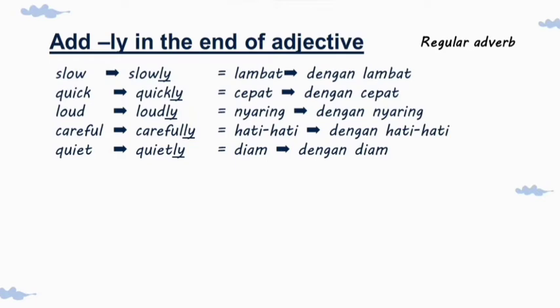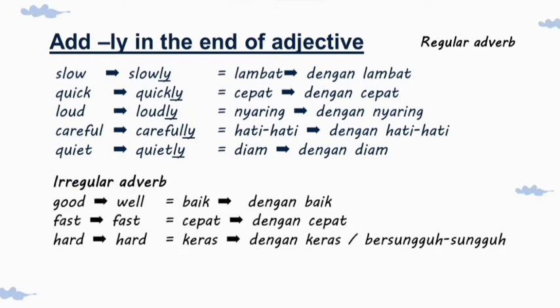Ada beberapa kata keterangan tidak beraturan yang biasanya kalian temui di buku atau di percakapan sehari-hari. Di antaranya ada 'good'. Good artinya baik, tapi ketika ingin diganti menjadi adverb, bukan jadi 'goodly', tapi kalian cukup pakai 'well', artinya dengan baik. 'Fast', mau itu jadi adjective atau adverb, dia tetap 'fast', tidak menjadi 'fastly'. Demikian juga dengan 'hard', tidak ada perubahan.